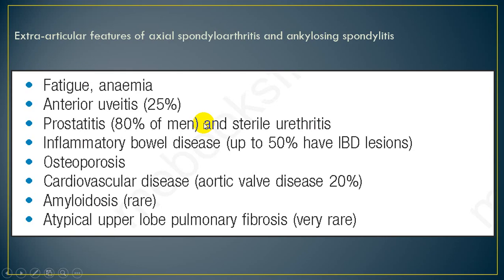Ankylosing spondylitis can also cause extra-axial involvement. Patients may complain of fatigue, anemia, eye involvement — most commonly anterior uveitis — prostatitis in men, inflammatory bowel disease, osteoporosis due to immobility and poor sun exposure, and cardiovascular disease — mostly aortic valve insufficiency and conduction defects. As a chronic inflammatory disease it can lead to secondary amyloidosis, and patients may have pulmonary fibrosis with characteristic upper lobe involvement.